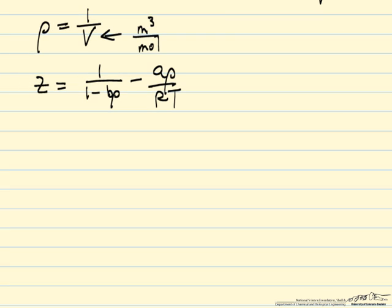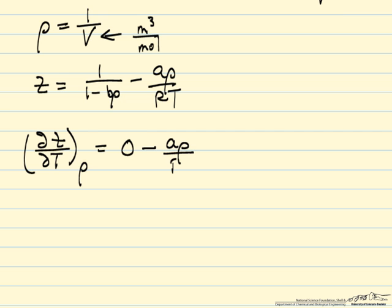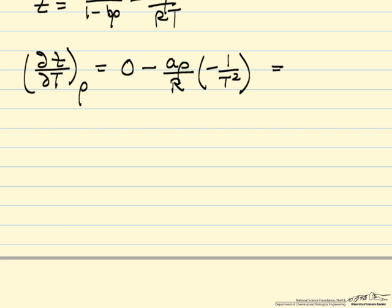So now I can do this differentiation. The partial derivative of z with respect to temperature, holding the density constant. Well, the first term, density is constant, B is constant, so the derivative is zero. Second term, A is constant, density is constant, R is constant. So I'm differentiating one over T and I end up with minus one over T squared, which gives A times the density squared over RT squared.